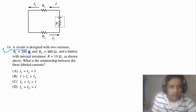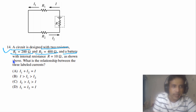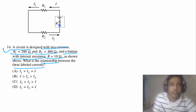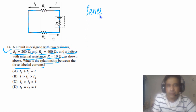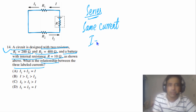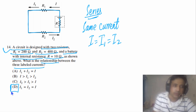Question 14: A circuit has two resistors R1 = 200 Ω and R2 = 400 Ω and a battery with internal resistance r = 10 Ω. What is the relationship between the three labeled currents I, I1, and I2? Since all components are connected in series, charge has only one path to flow, so the same current passes through each component. Therefore I = I1 = I2. The answer is D.